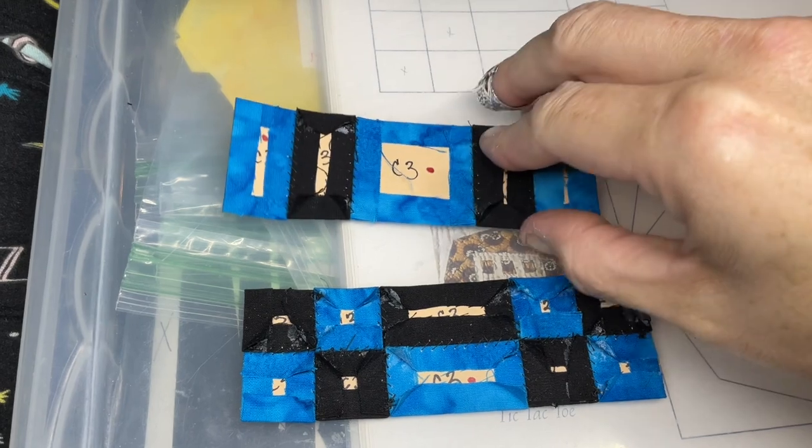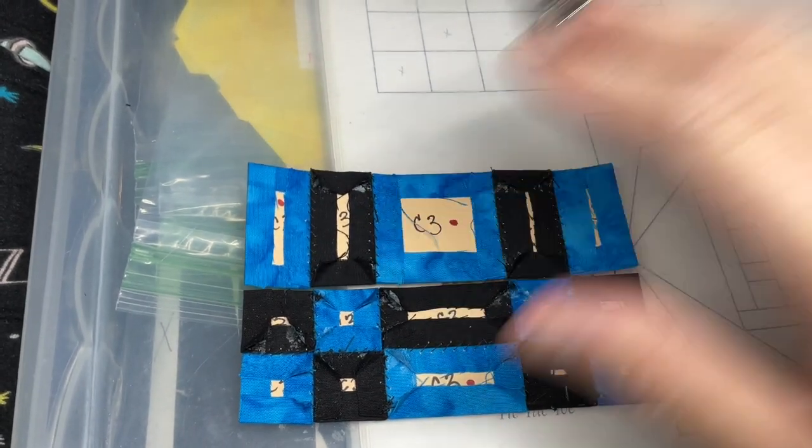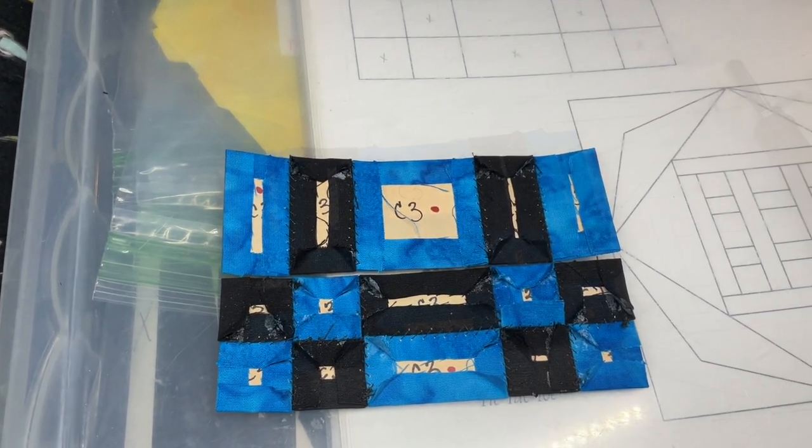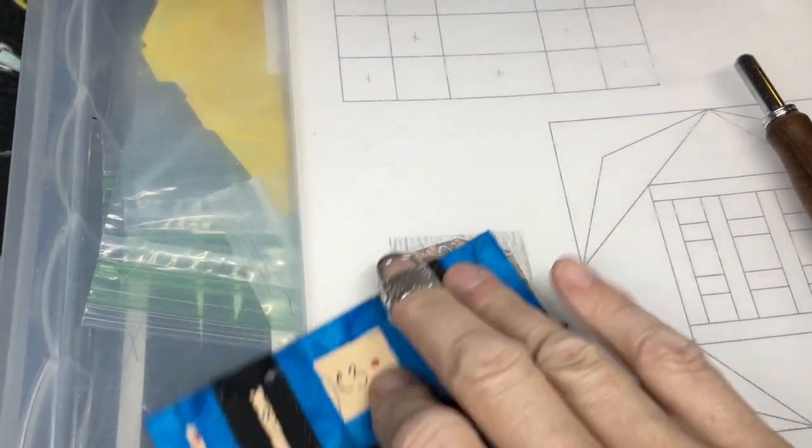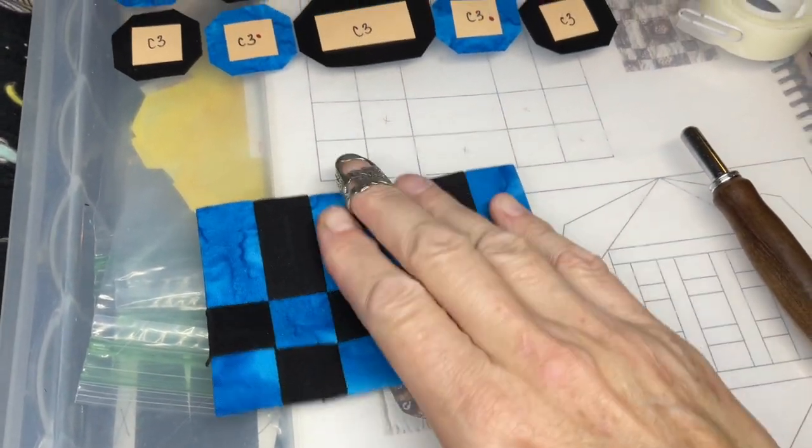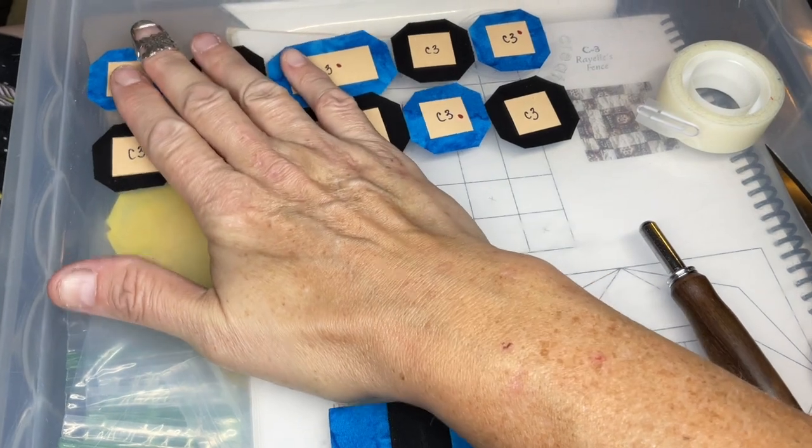I finished assembling the center section and now I will attach it to the bottom portion. I've got three rows assembled. I'm going to set this aside and now I'm going to assemble both top rows.